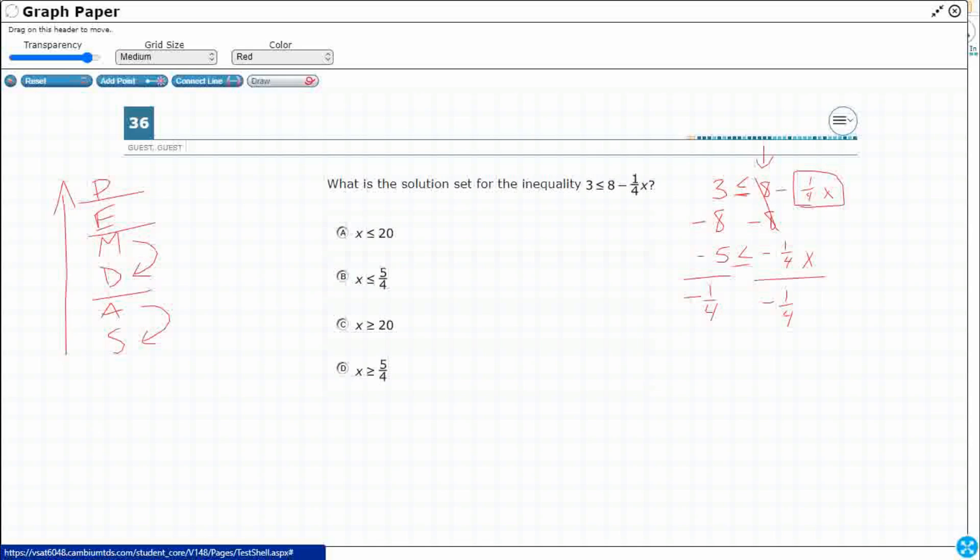Instead of doing that, which we could if we wanted to, let me rewrite this and show you it's the same thing. But I think this way is going to be a little bit easier. I'm just going to multiply both sides.